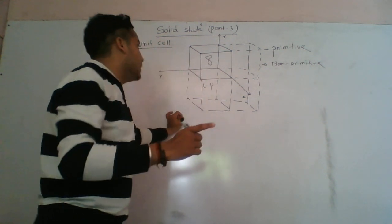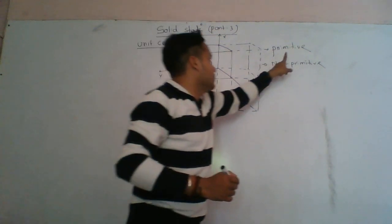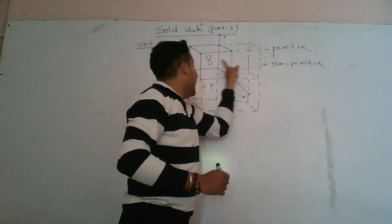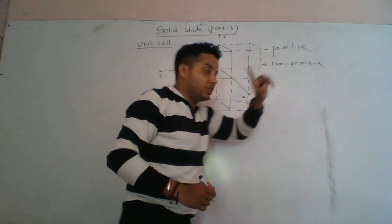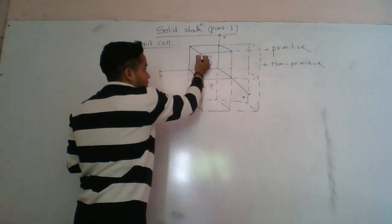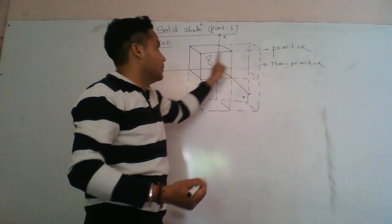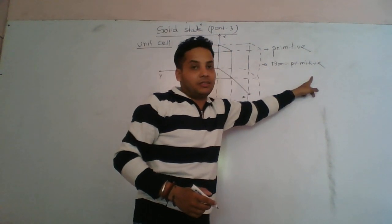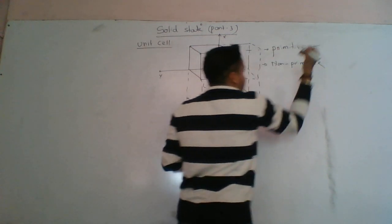If a unit cell has at least one lattice point, it is called primitive. If a unit cell has more than one lattice point, then it is called non-primitive. If a corner is fixed, then corners are at least one lattice point. If a lattice point is primitive then it is not a primitive place. Now the unit cell is a primitive cell.